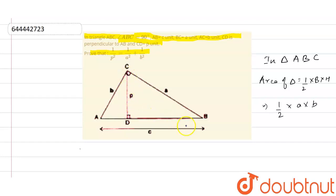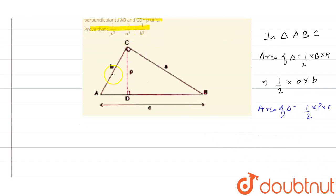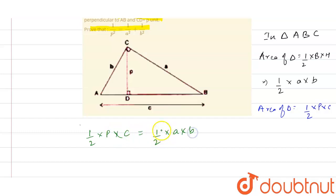Similarly, there is another height that is p in triangle ABC. So another area of the triangle is also equal to half multiplied by p (the height) multiplied by c (the base). So area equals half multiplied by p multiplied by c. Both these areas are equal, so we can say that half times p times c equals half times a times b.